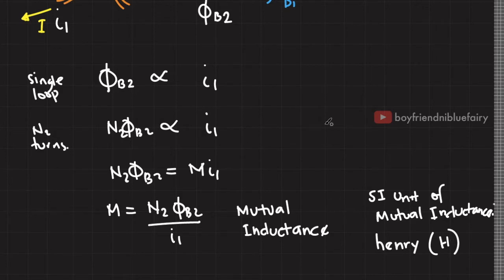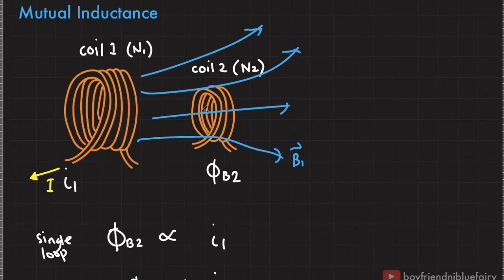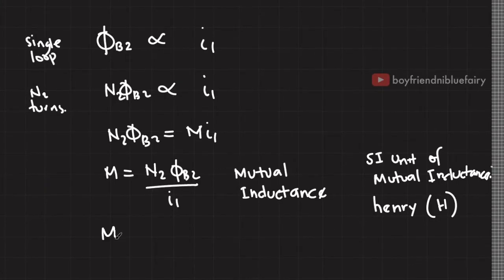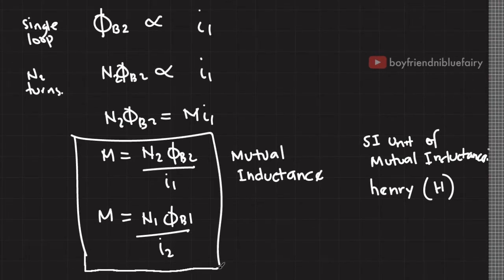Now based on the same reasoning, if coil 2 is the one with current and coil 1 initially has no EMF: if coil 2 has a changing current, it generates its own magnetic field, and if that current is changing, the flux passing through coil 1 also changes, resulting in an EMF. We could also calculate a mutual inductance for the flux passing through coil 1 due to the changing current in coil 2. It turns out that these two constants are equal, so you can calculate mutual inductance using the flux on coil 2 or the flux on coil 1.